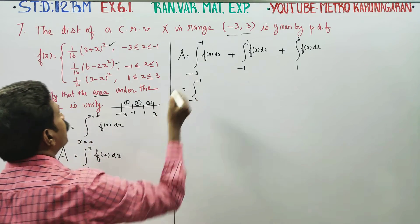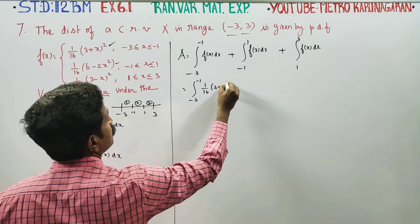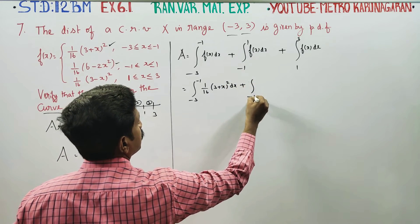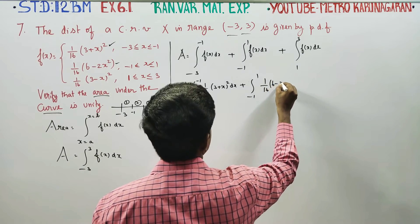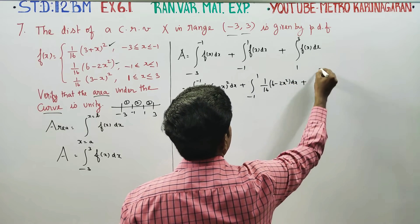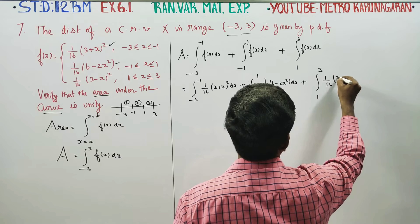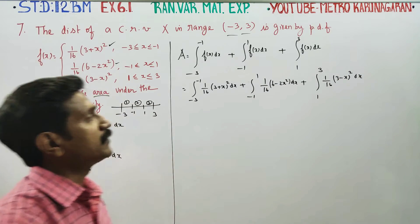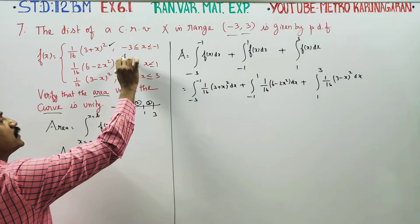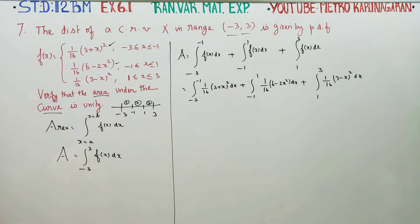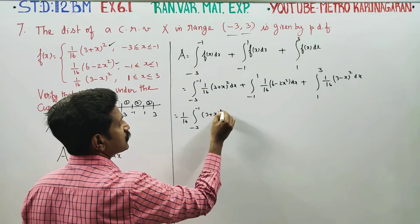For the interval minus 3 to minus 1, use the formula (1/16)(3 + x)^2. For the interval minus 1 to 1, use the formula (1/16)(6 minus 2x^2). For the interval 1 to 3, use the formula (1/16)(3 minus x)^2.